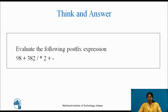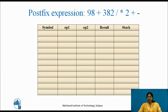Based on the previous example, evaluate the following postfix expression: 9 8 + 3 8 2 / * 2 + -. The first symbol is 9 — an operand, push it on the stack. Next symbol is 8 — an operand, push it on the stack (stack: 9, 8). Next symbol is '+' — an operator, pop 9 and 8, perform addition, result is 17, push it on the stack (stack: 17).